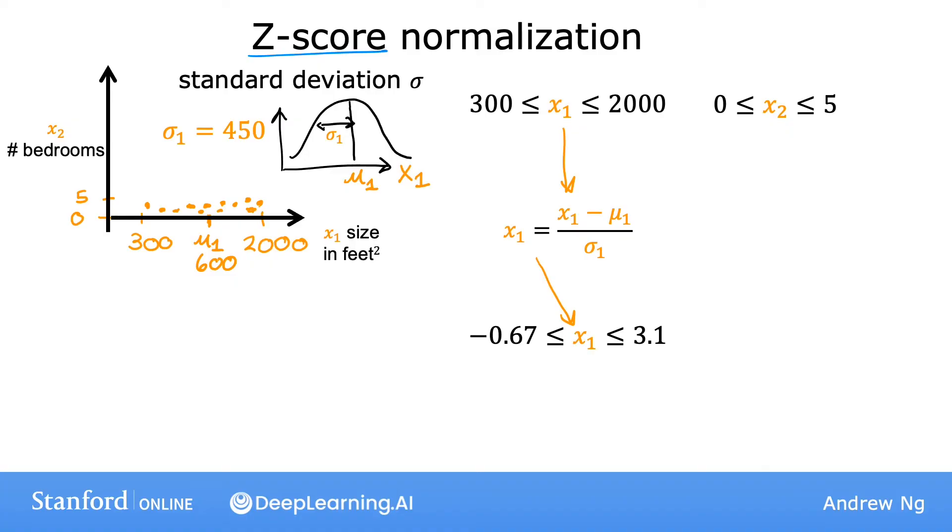Similarly, if you calculate the second feature's standard deviation to be 1.4 and mean to be 2.3, then you can compute x2 minus mu2 divided by sigma2. And in this case, the z-score normalized x2 might now range from negative 1.6 to 1.9.